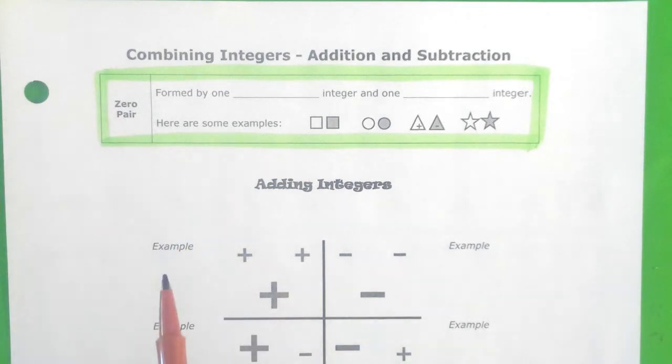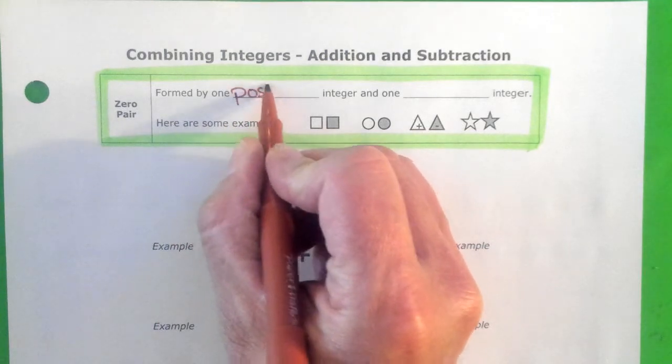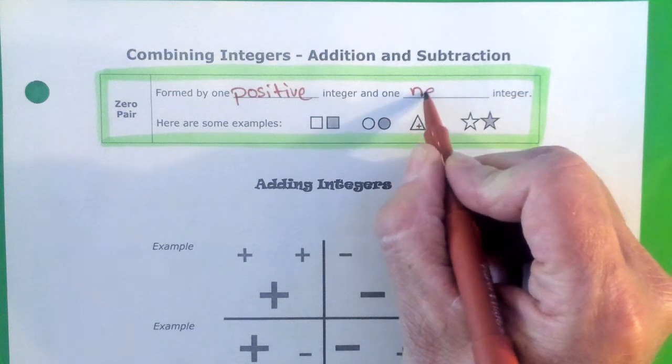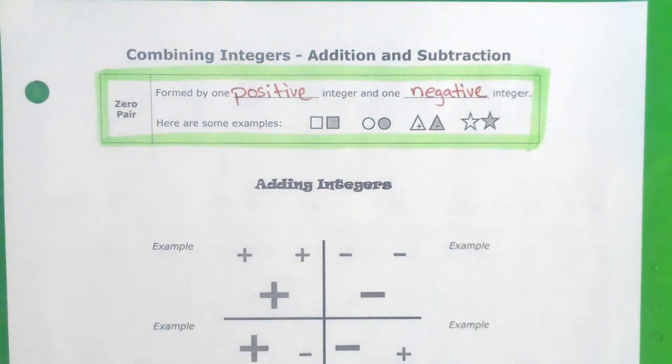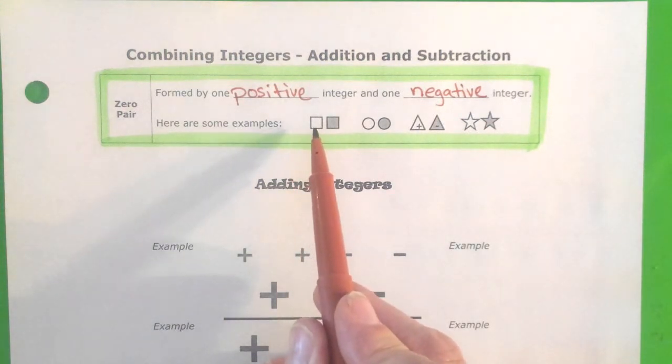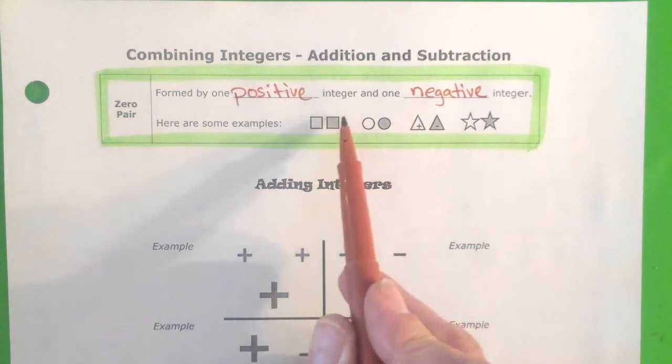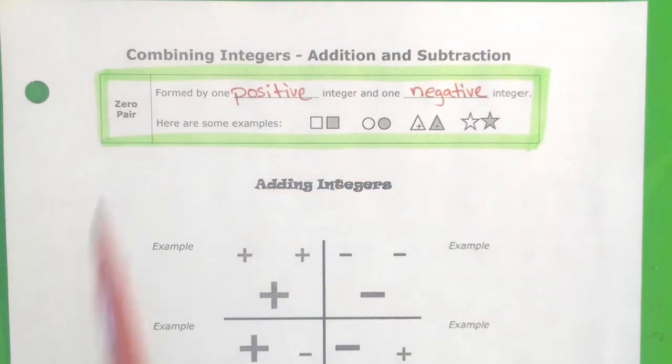We're going to talk about zero pairs. They are formed when one positive integer and one negative integer are put together. So if you take a positive, which we use an open shape, and a shaded shape is a negative, and you put them together, they cancel each other out and you have a zero pair.